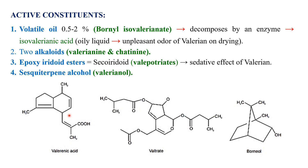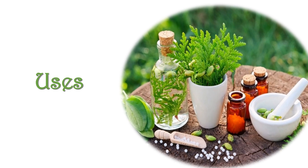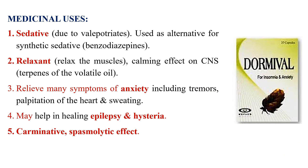Two alkaloids have also been detected in valerian root: valerianine and chatinine. Epoxy iridoid esters are a very important class of compounds present in valerian root, responsible for the biological activities to be discussed. The major epoxy iridoid ester present is responsible for the sedative effect of valerian. Another compound identified is cis-therapeutine alcohol, or valeriol.